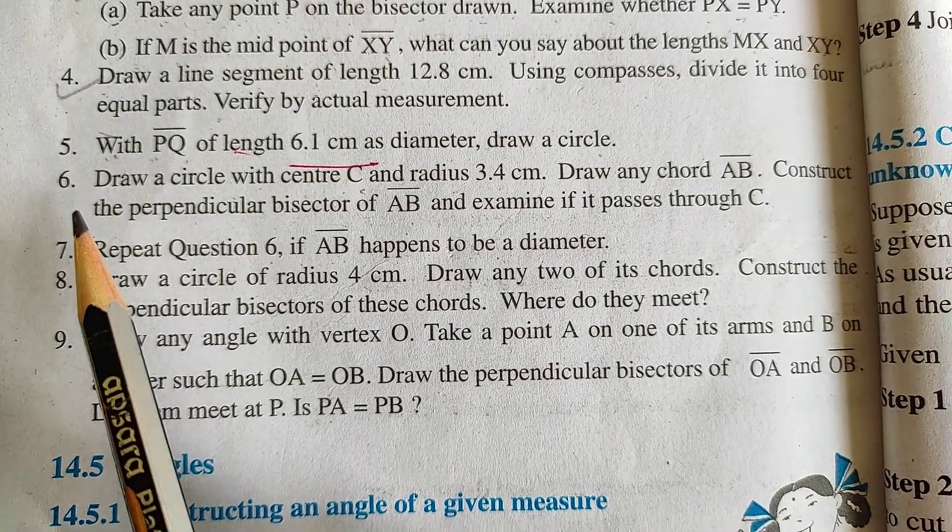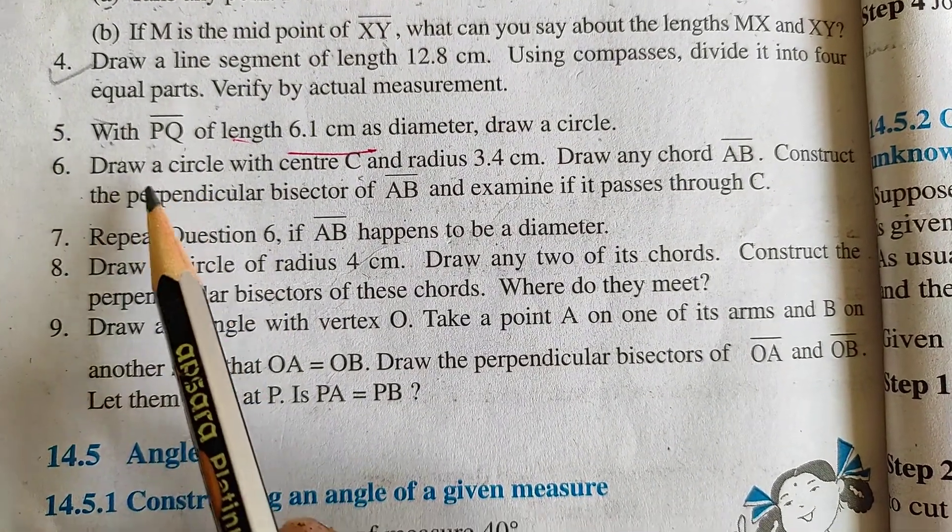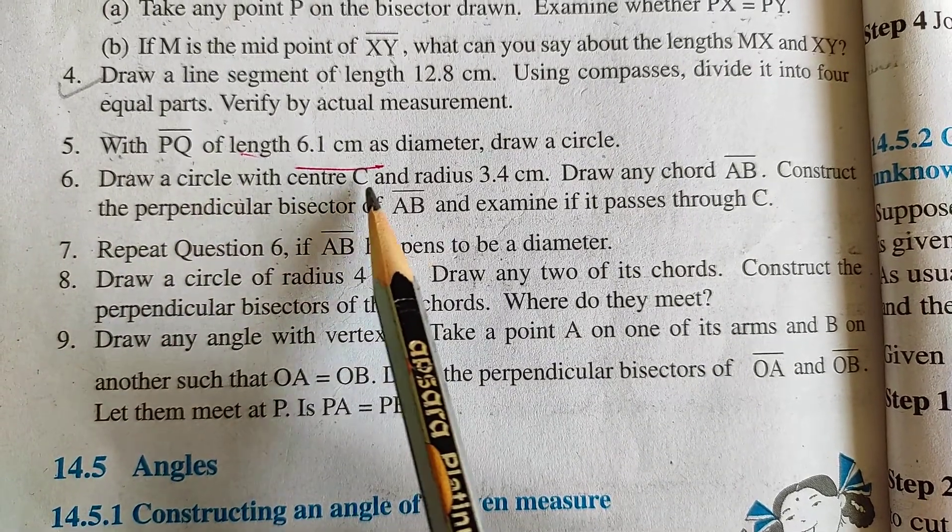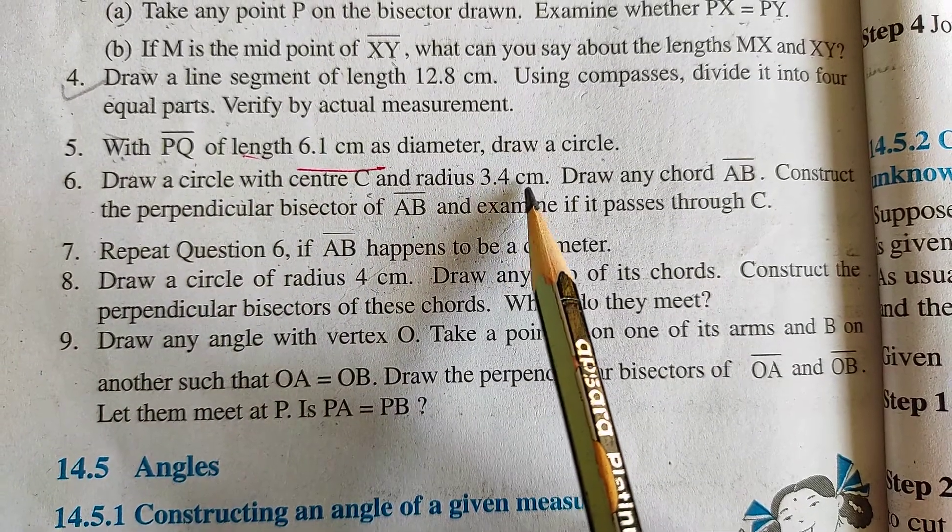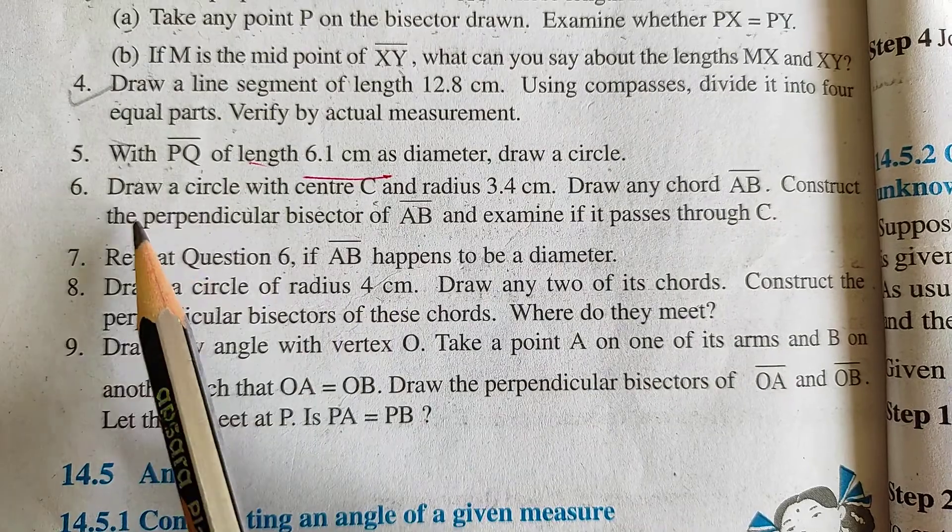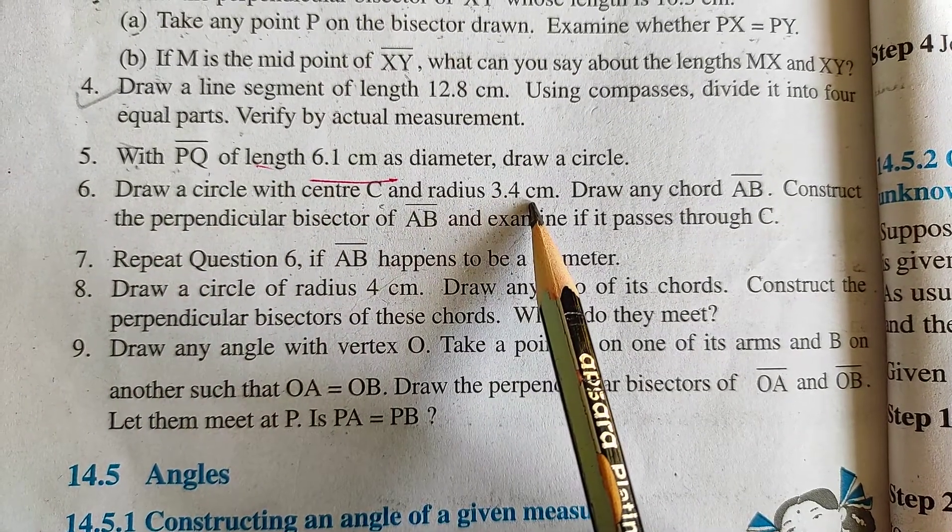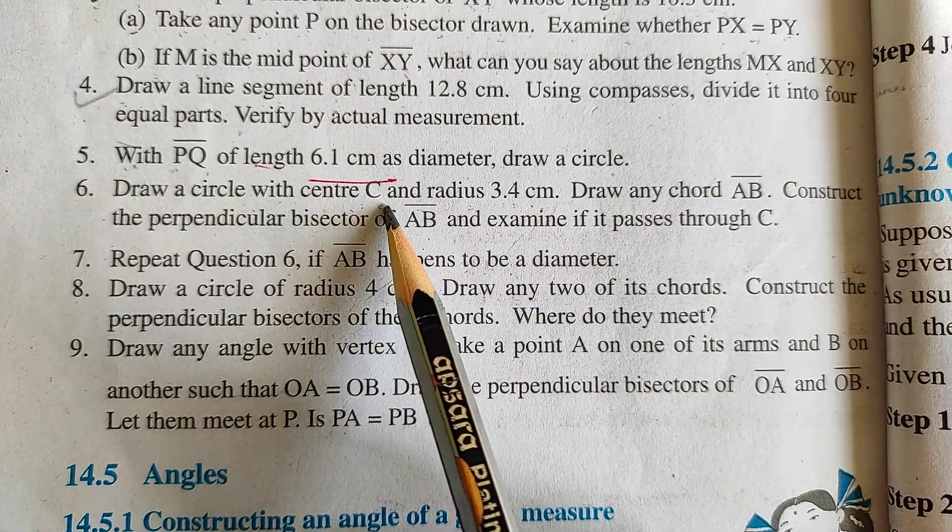Next question, question number 6 of exercise 14.5. Draw a circle with center C and radius 3.4 cm. In this question, you have to draw a circle whose radius is 3.4 cm with center C.